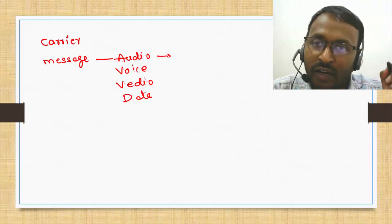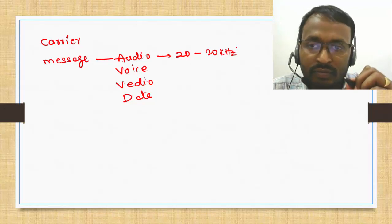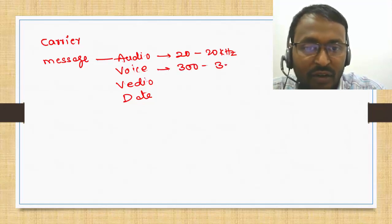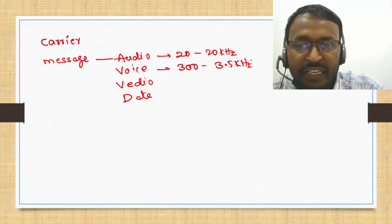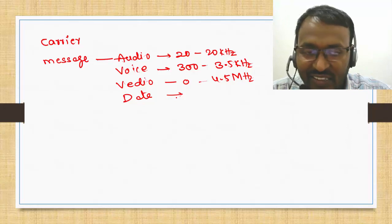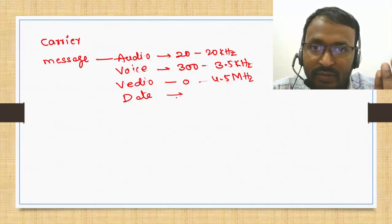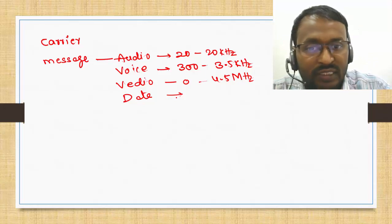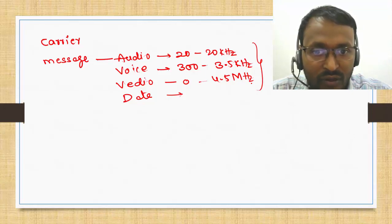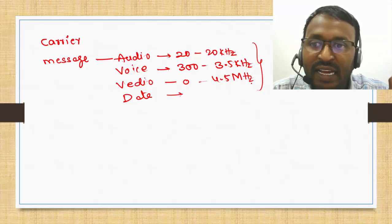What is the frequency range of audio? Voice is 300 Hz to approximately 3 kHz or 3.5 kHz. Video is up to 4.5 MHz. Data occupies hundreds of MHz — it depends on the pulse width, so data occupies high bandwidth. This is the message. Now, to transmit this message, I need a postman. That postman we are calling the carrier.